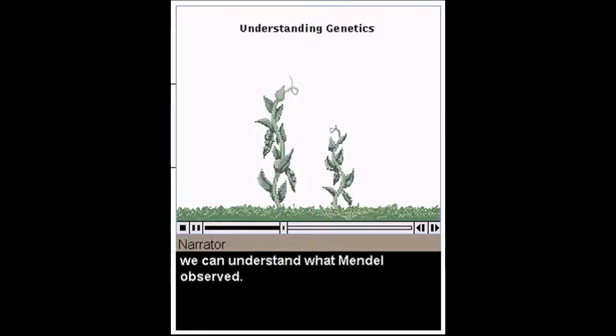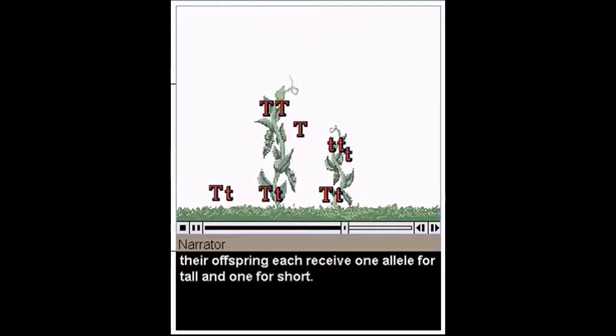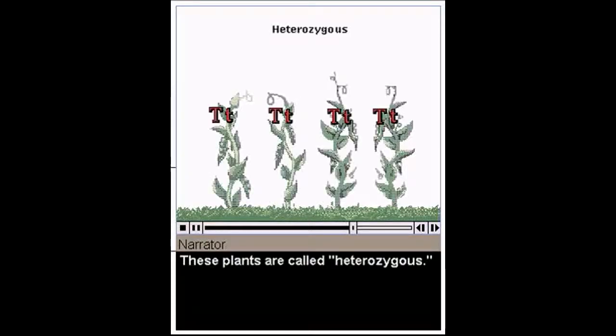By looking at the underlying genetics, we can understand what Mendel observed. Information about traits is carried on genes. We can represent the gene for height with the letter T. Each plant has two genes for height, one from each parent. Different forms of the same gene are called alleles. The big T represents the allele for tall and the little T represents the allele for short. In purebred plants, both alleles carry the same information and the plants are said to be homozygous. When tall purebred plants are crossed with short purebred plants, their offspring each receive one allele for tall and one for short. The offspring are called heterozygous. Since these plants all appear tall, we say that tall is the dominant trait and short is the recessive trait.